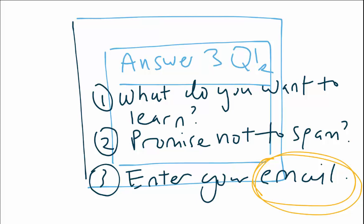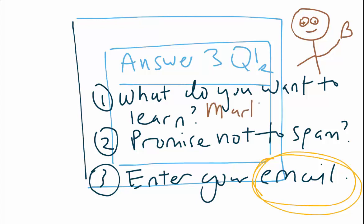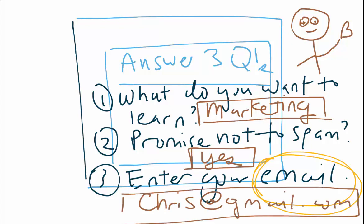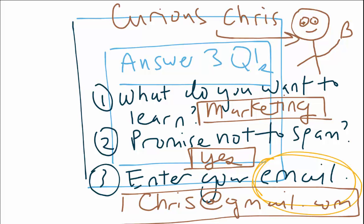It can be a free funnel, a free course, a free PDF — whatever thing you want to give to your audience. I'm going to have a persona; his name is Curious Chris. Curious Chris will answer these questions: 'marketing,' he promises not to spam, and that's his email. Please don't go and spam Chris!